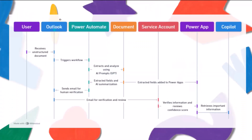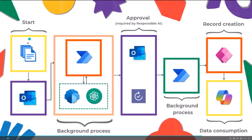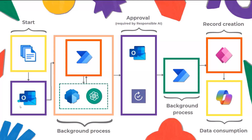What I would like to share with you is how the flow works. I think we should spend a lot of time on the architecture of the solution, which is what follows, and we can share it with you. We will have a start of the process triggered by a document coming through an email. Then this will be shared with Power Automate. We will use AI Builder and ChatGPT, and then we will receive feedback. It will go through an email because for responsible AI, we do need to have approvals. Then there's another background process that after the approval will create the record in the app, and then we can consume that record.